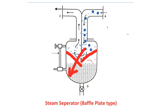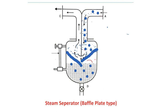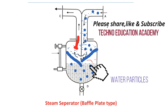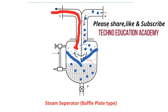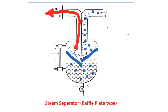Water particles have greater density — steam occupies approximately 1600 times the volume of water, so steam particles have light density while water particles have higher density. Due to inertia, the water particles fall down to the bottom of the separator. The drier steam is discharged through flange C. To see the level of water collected, a water gauge is provided, from which the water level in the separator can be read.